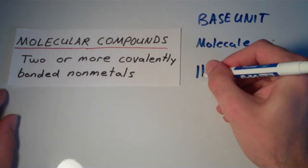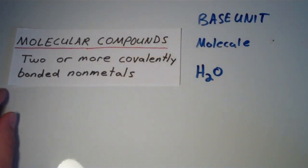And the base unit for molecular compounds is the molecule. So if I have like a bottle of water, for instance, H2O, if I have a bottle of that stuff, then that water that sits in that bottle is composed of these individual H2O molecules. There's just a lot of them.